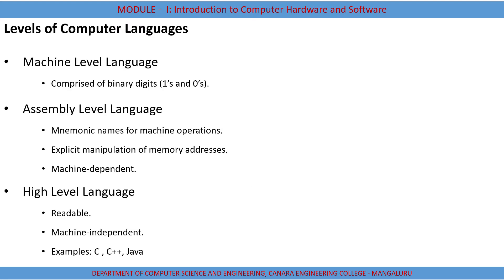There are three different levels of computer languages. The first is machine level language, the second is assembly level language, and the third is high level language. Machine language is basically comprised of binary digits — it uses zeros and ones to interact with the computer, using only combinations of zeros and ones with no other statements.